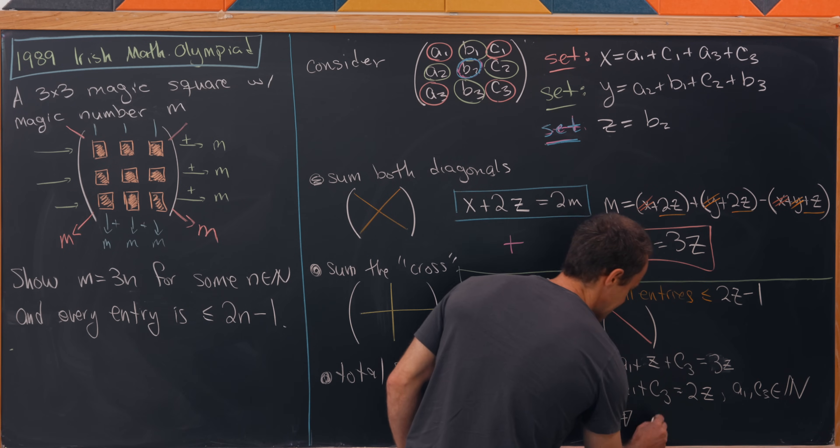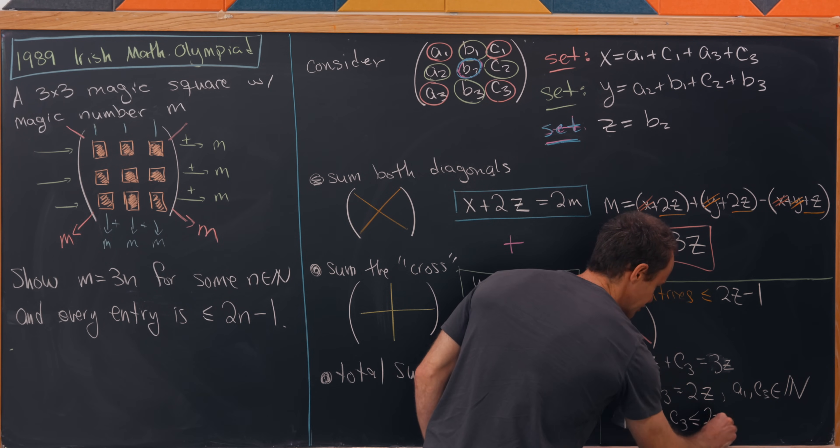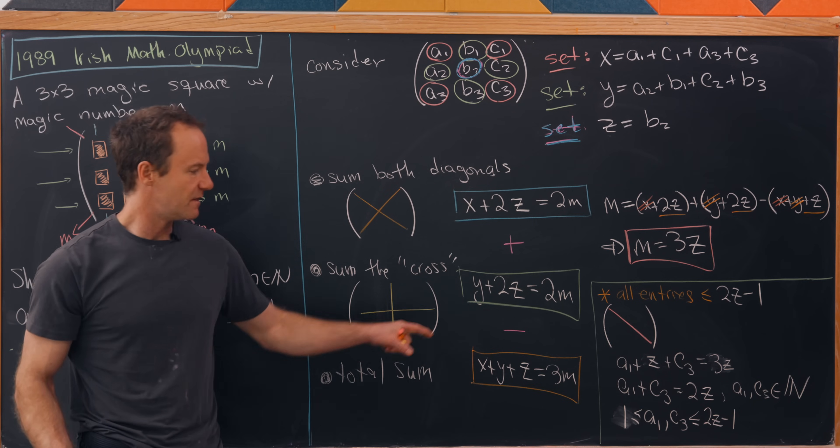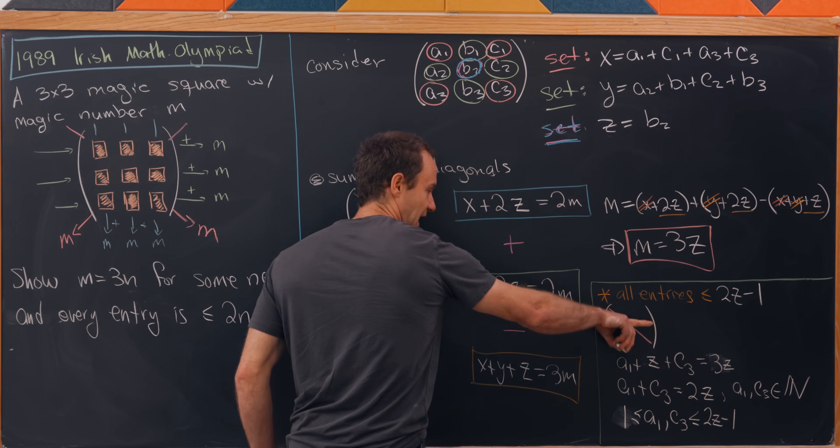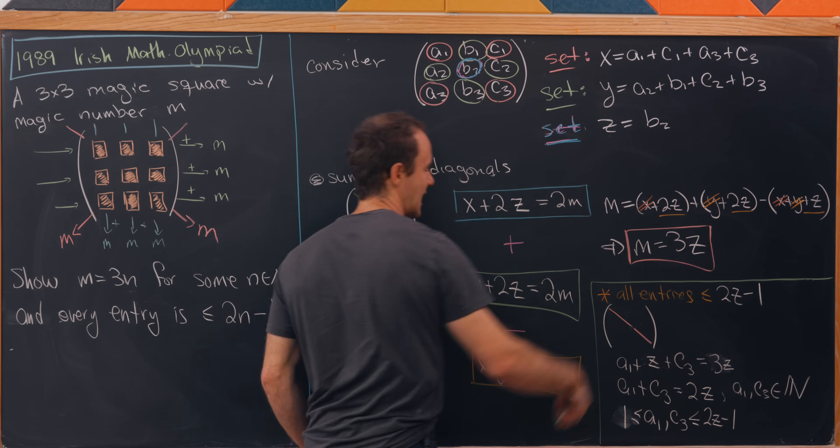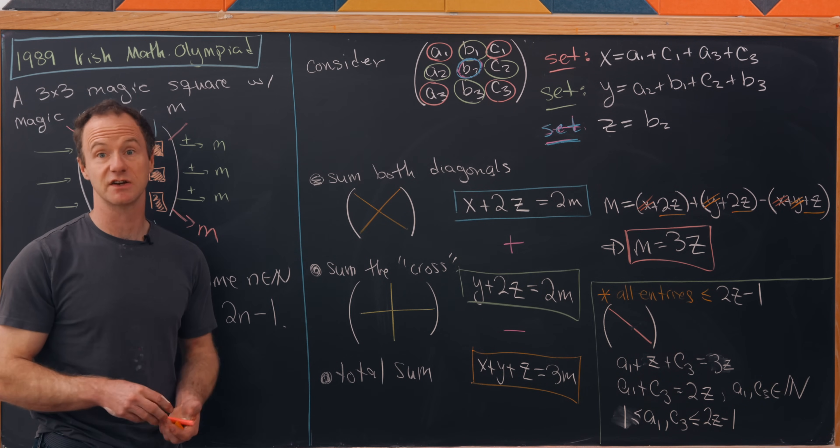In other words, a1 and c3 are bigger than or equal to 1 and less than or equal to 2z minus 1. That can be repeated for the other diagonal, as well as the central row and the central column to do the same thing for the other entries. And that's a good place to stop.